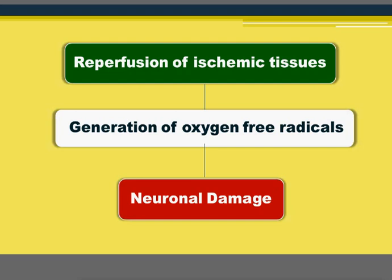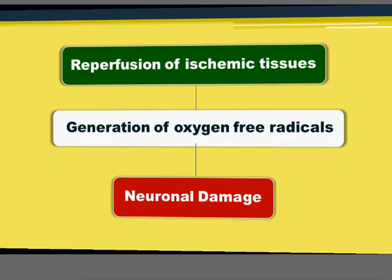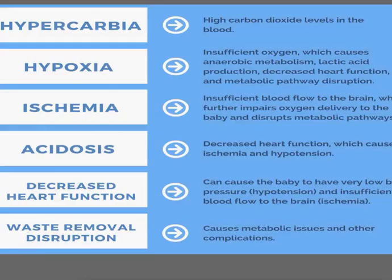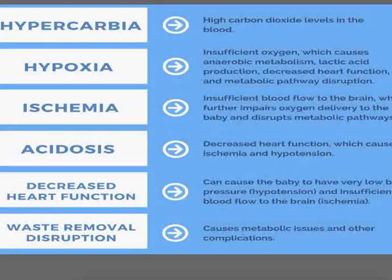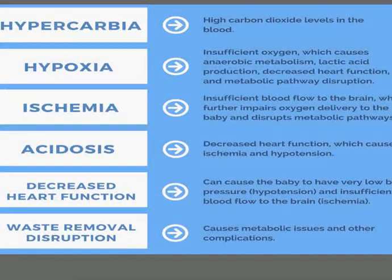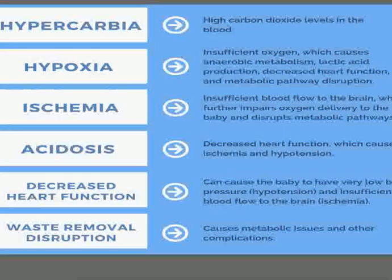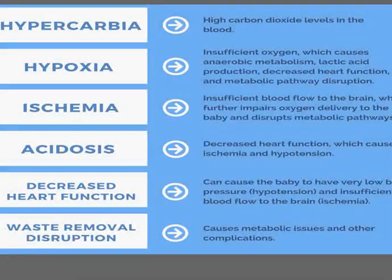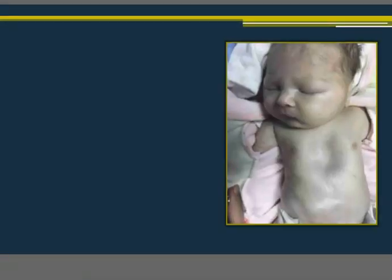The biochemical and circulatory changes in birth asphyxia include hypercarbia, hypoxia, ischemia, acidosis, decreased heart function, and disruption of waste removal — all interacting together.